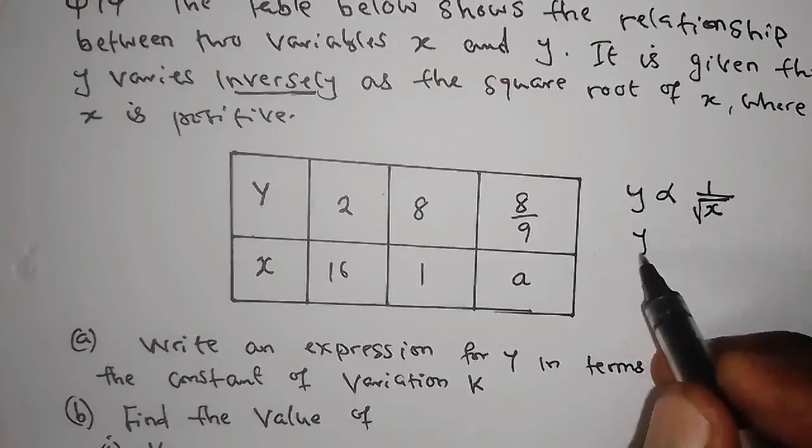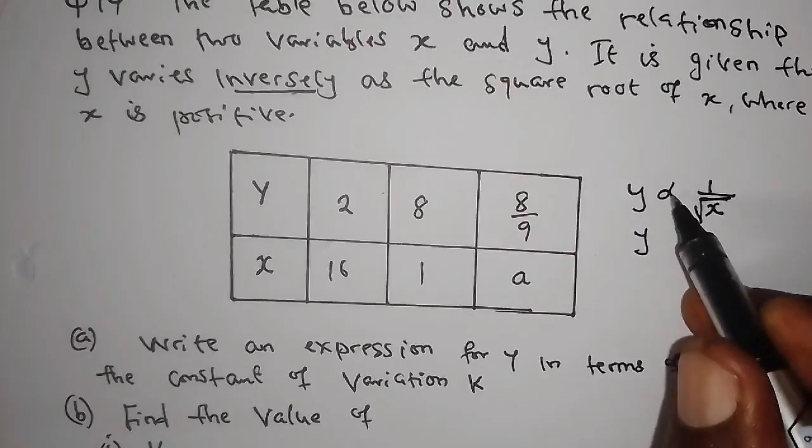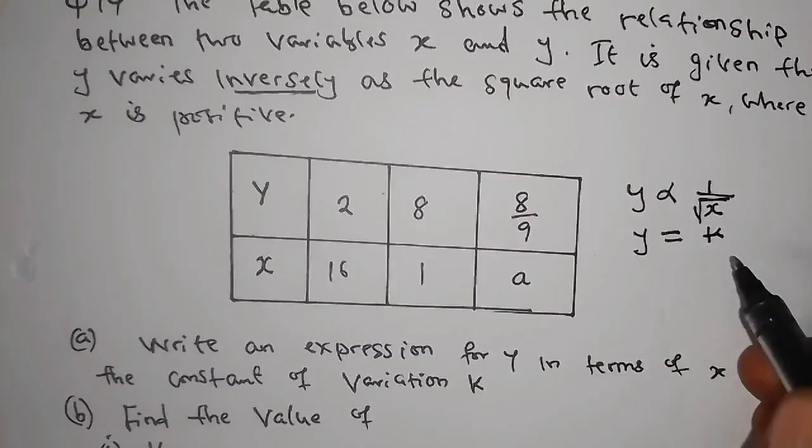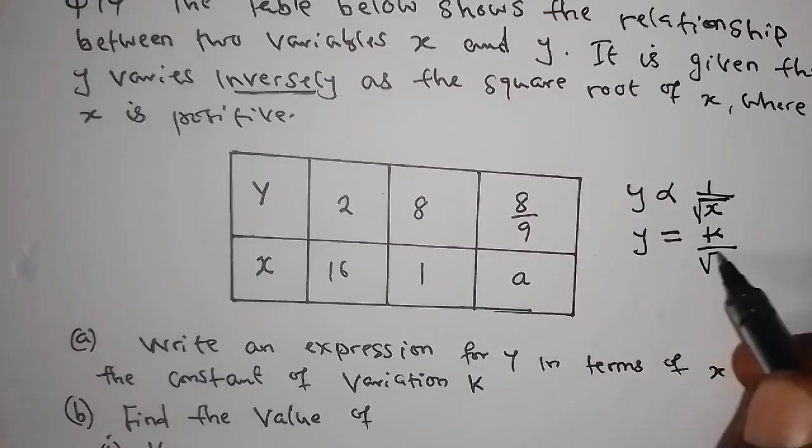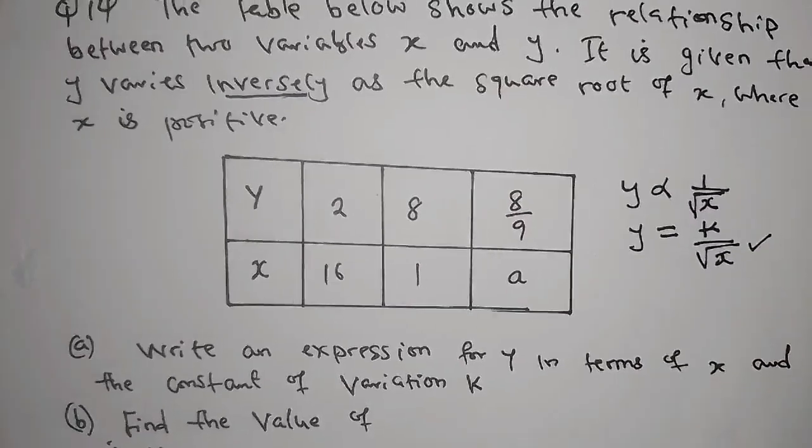So we have something like y. Now you can introduce the constant by removing this variation symbol and saying is equal to k over the square root of x. So this is what is very important.